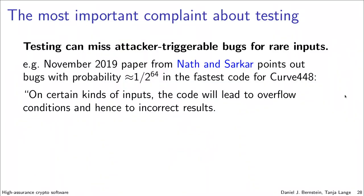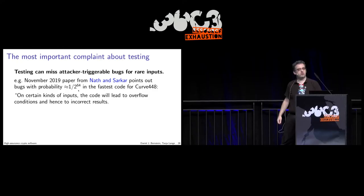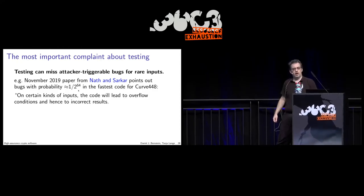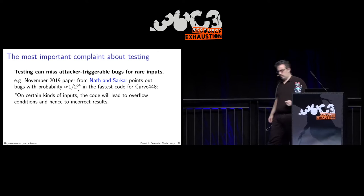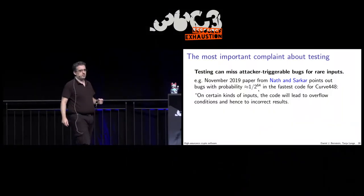This very much affects cryptography. For example, in November 2019 at CCS they said there is a bug in Curve448, which occurs randomly with a probability of 1 in 2^264. That's a lot of tests, and I don't think I can run that many.